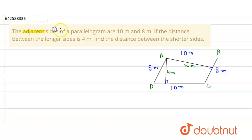In the given question, the adjacent sides of the parallelogram are 10 meter and 8 meter. If the distance between the longer sides is 4 meter, then we have to find the distance between the shorter sides.